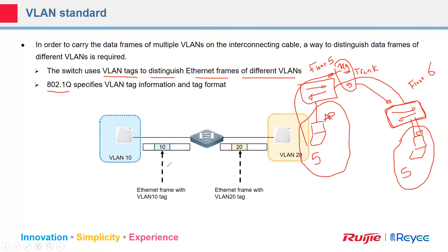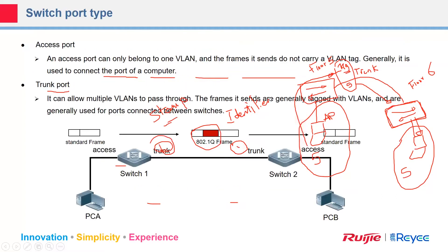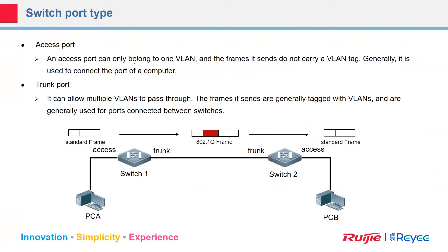802.1Q is the standard protocol for VLAN tag information and tag format. This is an example of an Ethernet frame with a VLAN 10 tag and a VLAN 20 tag — it's an identifier for the frame. The switch receives the frame and knows it belongs to VLAN 20 or VLAN 10. I sometimes call it a 'stamp' because you are stamping the traffic with the VLAN number. This explains the access port and trunk port: the access port can only belong to one VLAN.